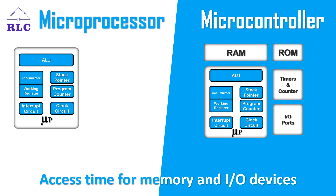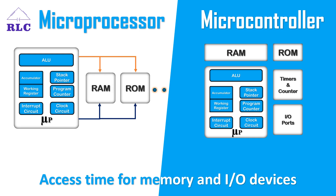The second difference concerns access time for memory and I/O devices — the time taken to fetch data from memory and I/O devices. A microprocessor does not have inbuilt memory or I/O ports; these are connected externally. Whereas a microcontroller has memory and I/O ports integrated in it. Therefore, a microprocessor takes more time to access memory and I/O devices, while a microcontroller takes less time.